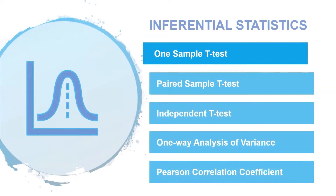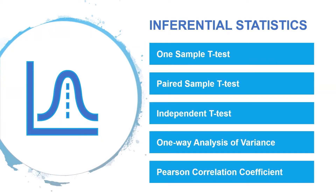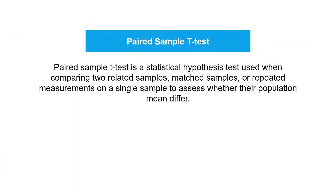The next test is the paired t-test. This test is a statistical hypothesis test used when comparing two related samples, matched samples, or repeated measurements on a single sample to assess whether their population means differ.